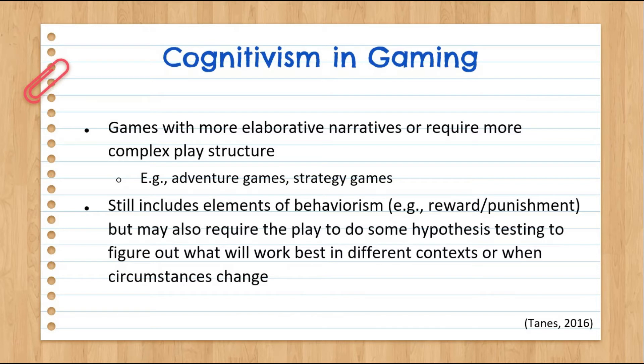The article noted that cognitivism works better with games that have more elaborative narratives, like adventure games, or those that require a more complex play structure, like strategy games. These are better explained by cognitivism than behaviorism. While we can still see elements of behaviorism like reward and punishment, games more aligned with cognitivism may require the player to do hypothesis testing to figure out what works best in different contexts or when circumstances change.